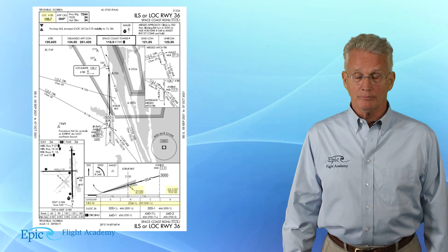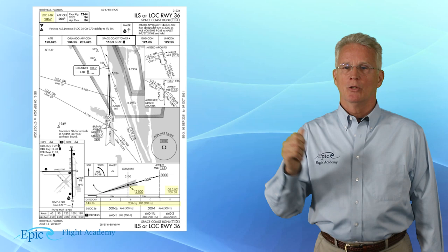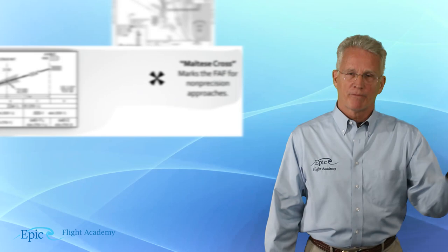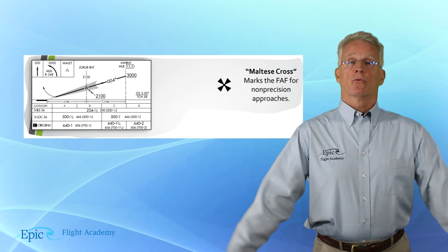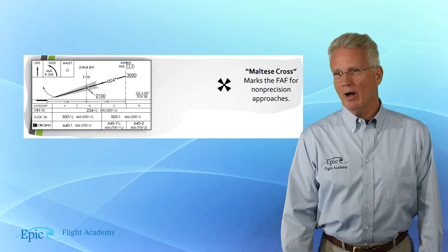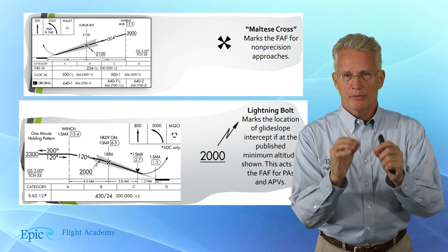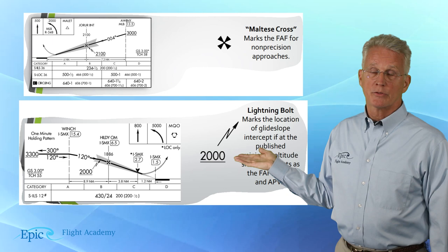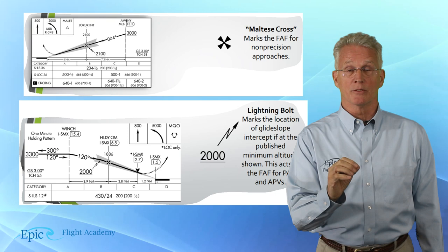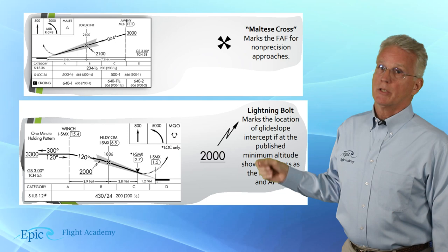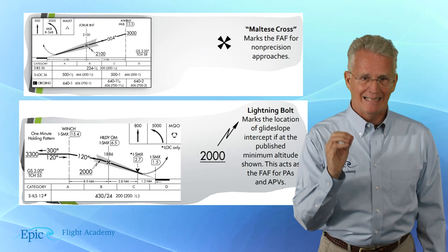Now, that lightning bolt is not pointing to the Maltese Cross, even though it looks like it is. Remember from an earlier video that the Maltese Cross is the final approach fix for a non-precision approach. Oftentimes that lightning bolt and that Maltese Cross are at the same position — and on this approach, sure enough, they are. But that is not always the case. Remember: the lightning bolt is the final approach fix for a precision approach; the Maltese Cross is the final approach fix for the non-precision approach.